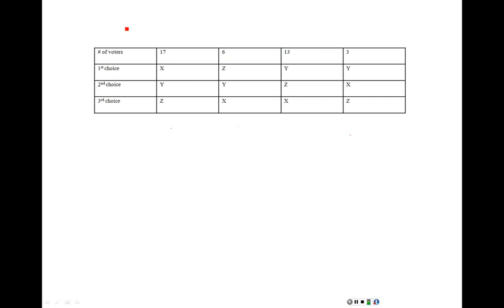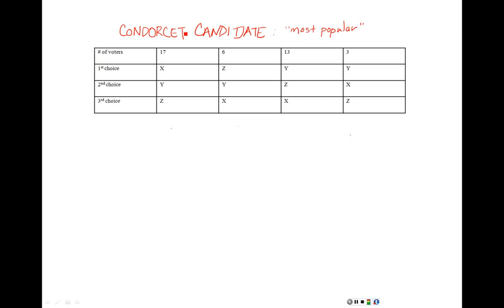In this video, what we're going to learn to do is identify if a particular election has what's called a Condorcet candidate. A Condorcet candidate — sometimes called the most popular candidate — is different from the plurality winner. When we're talking about the Condorcet candidate, we're looking at each particular candidate compared to each other candidate.